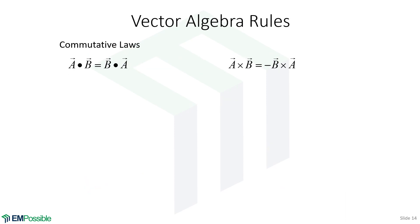Here's a summary of vector algebra rules, with dot product rules on the left and cross product equivalents on the right. For the commutative law: dot products are fully commutative — reversing A and B gives the same answer. Cross products are not commutative; reversing the order of A and B introduces a negative sign due to the change in handedness. So strictly speaking, cross products are not commutative, though we can reverse order if we remember to include the negative sign.